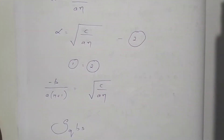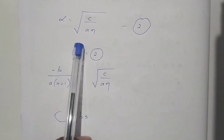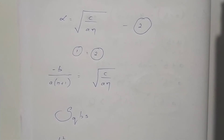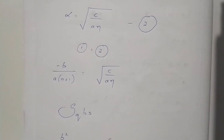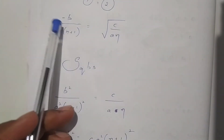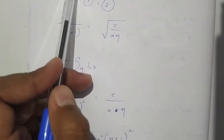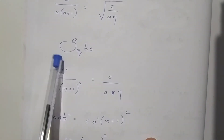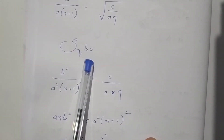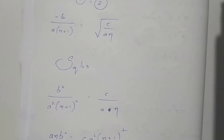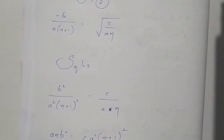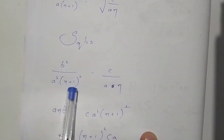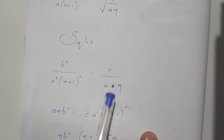From the product of roots we got the value of alpha as the square root of c/(an). We now equate both expressions for alpha: -b/[a(n+1)] = √(c/(an)). Squaring both sides to remove the square root, we get b²/[a²(n+1)²] = c/(an).